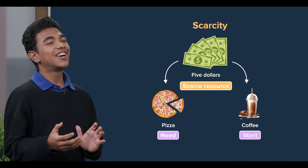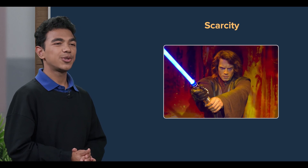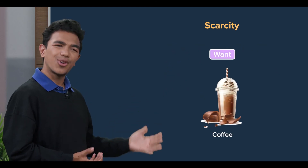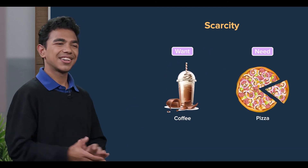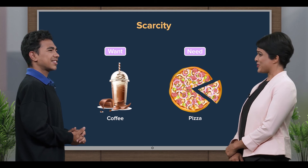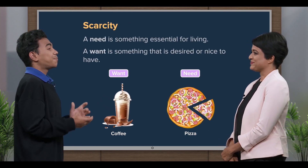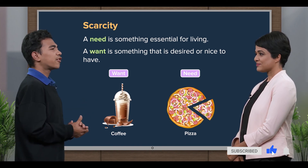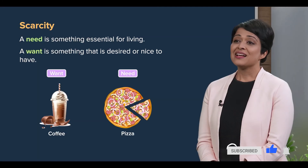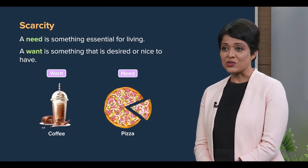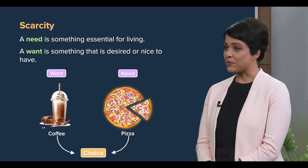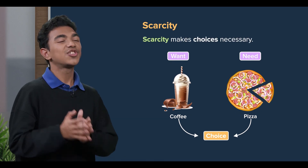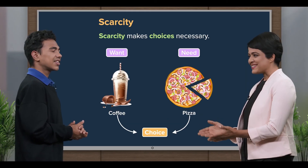This is like when Luke Skywalker had to choose between joining the light side or the dark side in Star Wars — I want a dark coffee, but I also need a light pizza! Bit of a tortured metaphor there, but you're on the right track. The pizza is my need and not my want because I'm hungry and therefore need the nutrition from the pizza, right? That's right. And given your scarce resource, you must make a choice between the pizza and the coffee. So scarcity makes choices necessary. Yes, exactly.